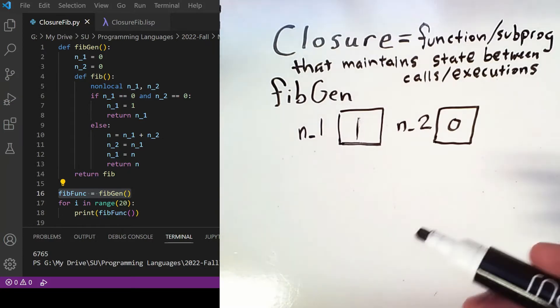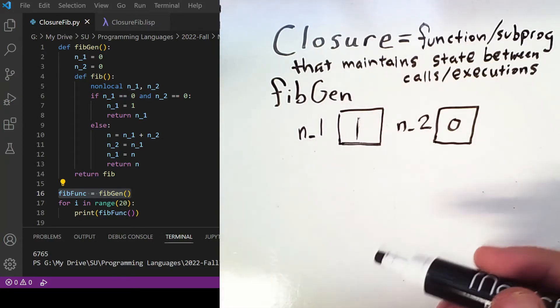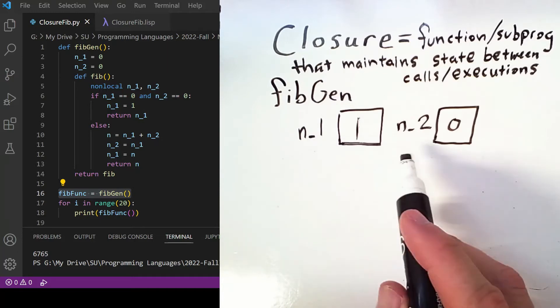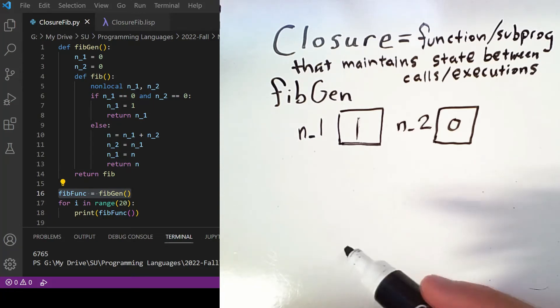Now, every time fibfunc is called, an instance of the fib subprogram is on the call stack and it goes away whenever that function returns. But the values of n1 and n2 persist in memory, so that the next time we call fibfunc—which of course is calling fib—we refer to the previously instantiated values.